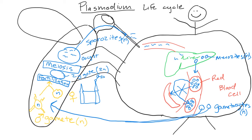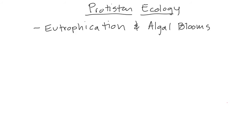How do the gametocytes get inside the mosquito? Two different mosquitoes — one infects the human, and then another mosquito comes along and drinks the blood. There are medicines, both preventative and post-infection, to help with malaria. If you've gone to Africa you may have taken malaria pills — they can cause hallucinations and crazy dreams, but they're preventative and reduce the chances of getting malaria. Know that life cycle; there's a worksheet with blanks from the book that would more than likely be on the exam.